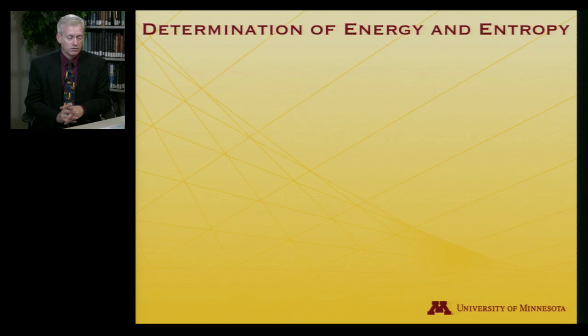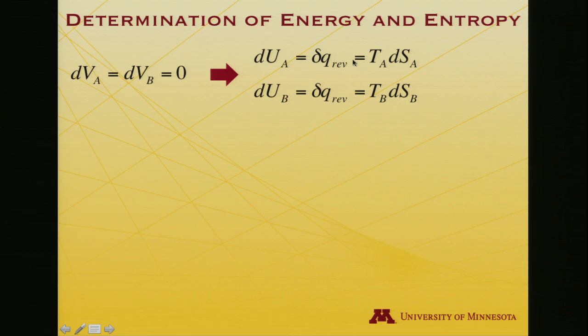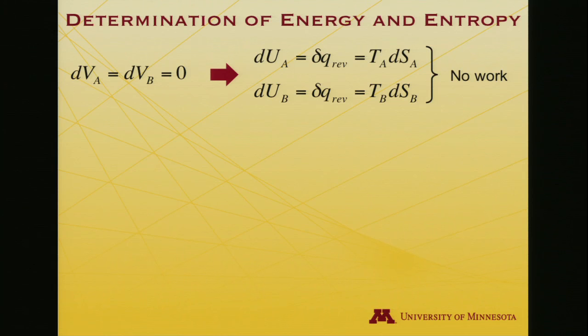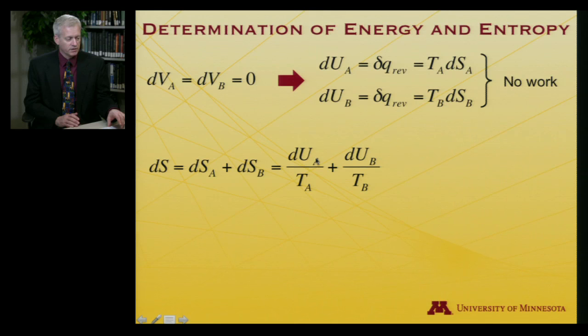Given no changes in volume, dU is just equal to δQ. Since this is reversible heat, it's also equal to T dS, where T is the temperature on an individual side, either A or B. So the total entropy change dS equals dSA plus dSB, which we can express as dU_A divided by T_A plus dU_B over T_B.